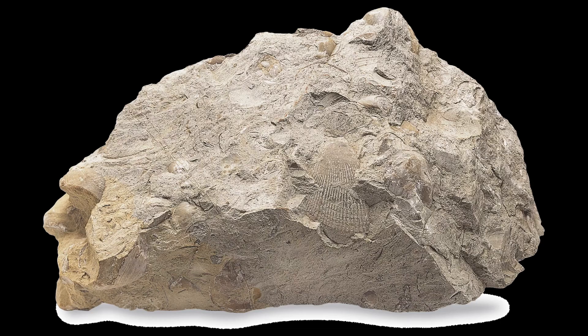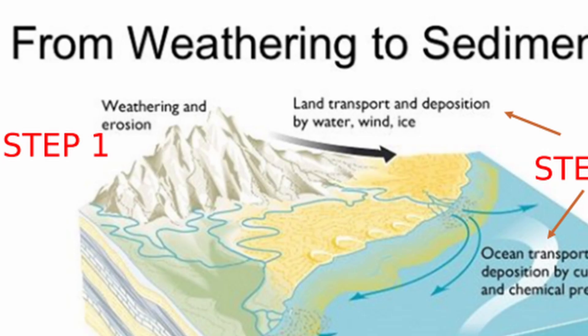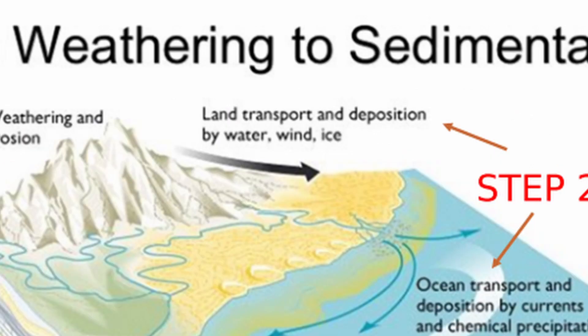Speaking of rocks, you can turn into a sedimentary rock, but not yet. First, you must go through three basic steps. Conversion to a sedimentary rock involves three basic steps: weathering and erosion, deposition, and lithification. Let's start with weathering.